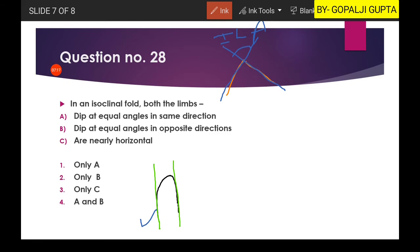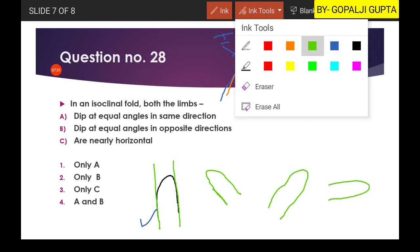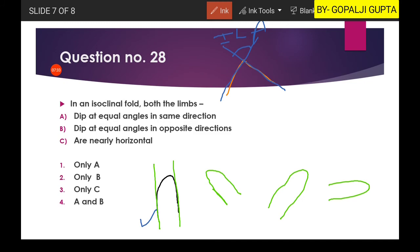So you can draw an isoclinal fold like this. You can also draw an isoclinal fold like this. You can also draw isoclinal fold like this. And you can also draw an isoclinal fold like this. So now you can see that in each and every isoclinal fold, limbs are dipping in the same direction. In this case they are in this direction. In this case the limbs are dipping in this direction. So we can use statement A: dips at equal angle in the same direction.